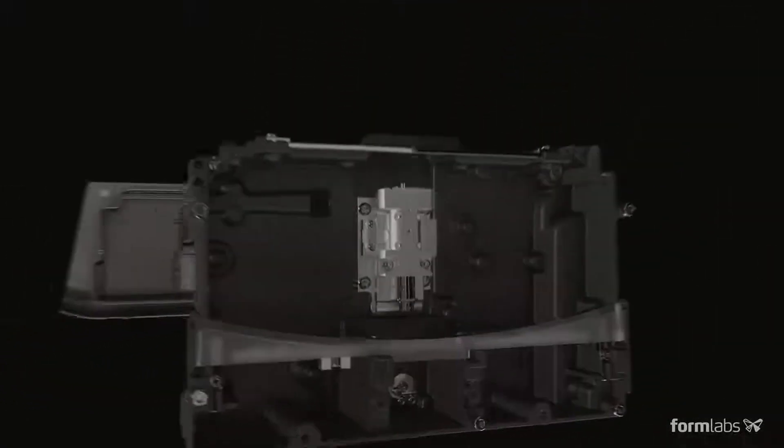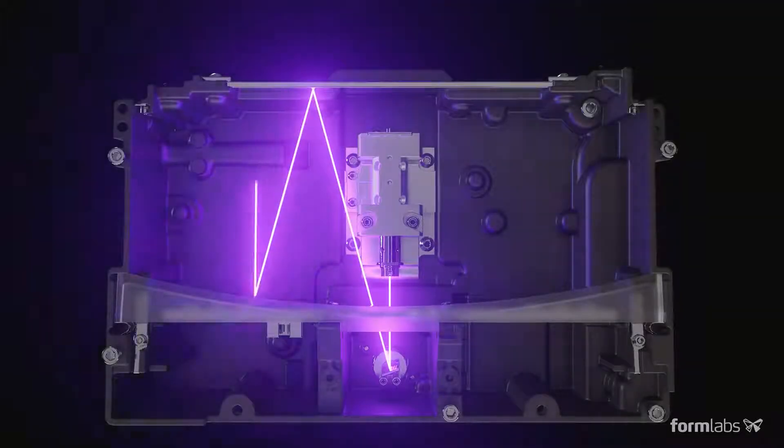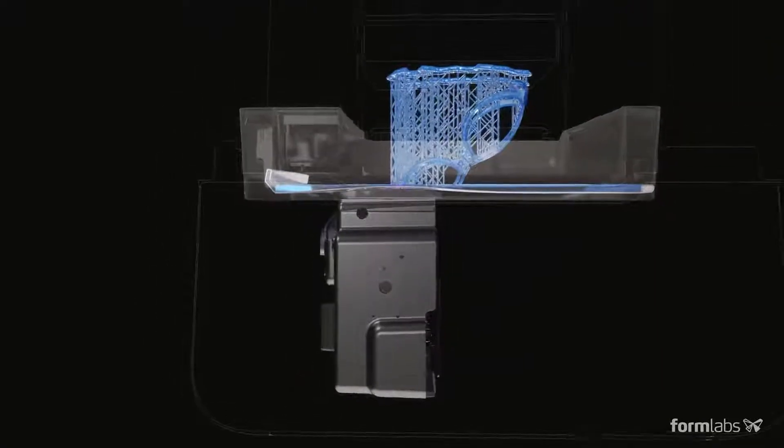At the heart of the machine is the Light Processing Unit, or LPU, an enclosed laser system that uses spatial filtering and a parabolic mirror for uniform illumination across the build area.